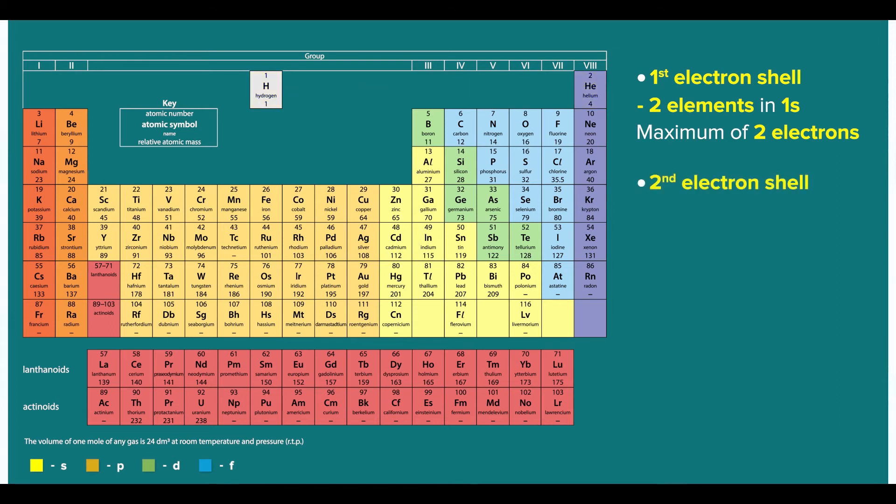For the second electron shell, since there are 2 elements with the 2s label, and 6 elements with the 2p label, this means that there can be a maximum of 8 electrons in the second shell. Correct again!